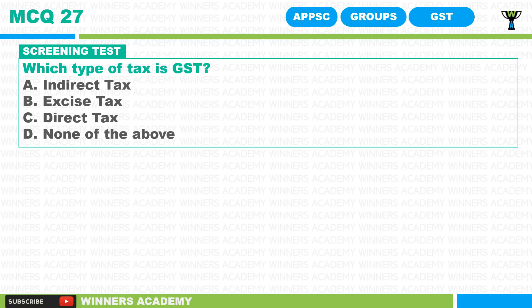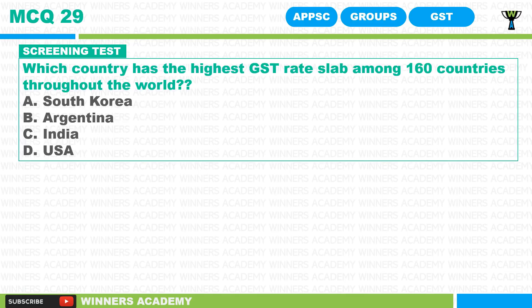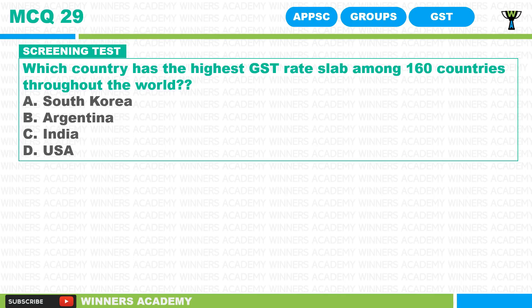MCQ 28: Who introduced the GST bill in Lok Sabha? MCQ 29: Which country has the highest GST rate slab among 160 countries throughout the world? Note: The GST bill was introduced twice, but this question applies to the current GST bill which was approved. Options for MCQ 29 are: South Korea, Argentina, India, or USA.